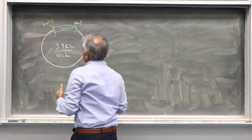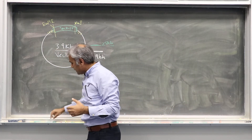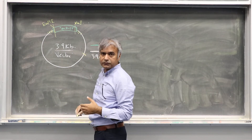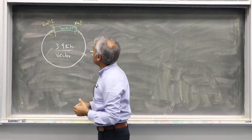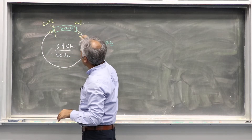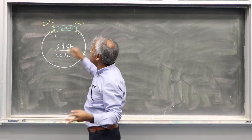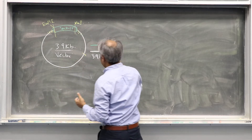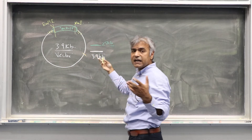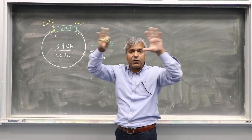Let's say you use XbaI and EcoR1, but EcoR1 also cuts here in the vector. How many fragments do you expect? You expect a fragment going from here to here, a fragment from here to here, and this fragment — so three fragments. You should say 2.5 KB for the insert. This is what we call a restriction map — a map of the plasmid.